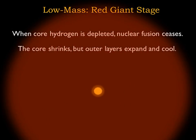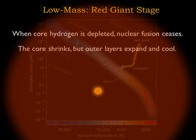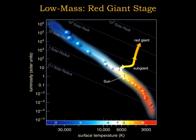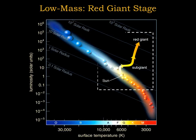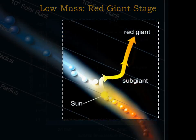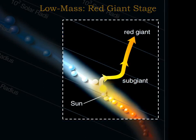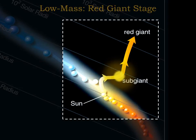Strangely enough, even though the core is shrinking, the outer layers will expand and cool. We can follow the sun's life track on an HR diagram as it goes from a main sequence star to a giant star. After it turns off the main sequence, the sun will move almost horizontally to the right as it grows in size to become a sub-giant.